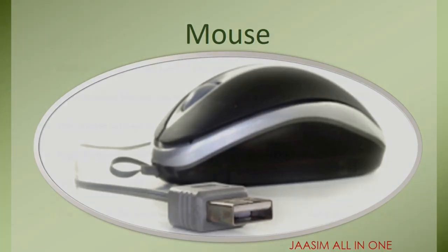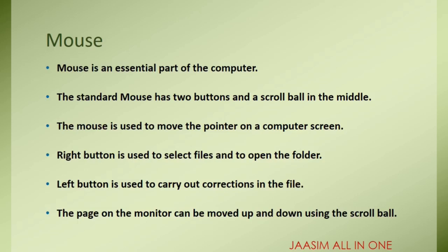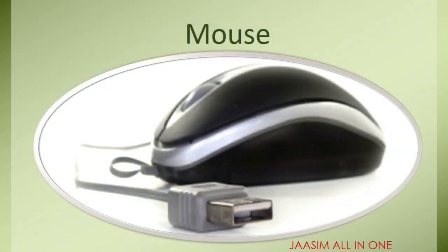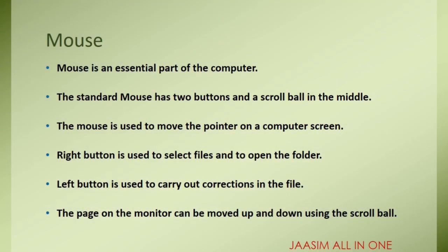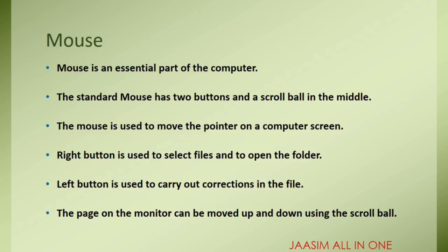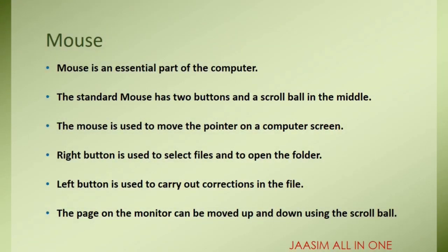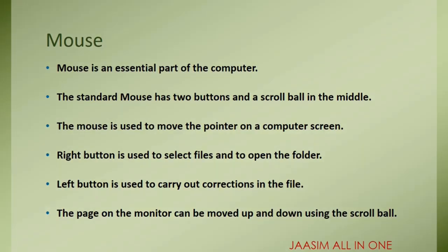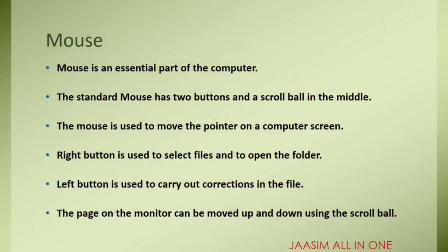Mouse is a very basic input device and an essential part of the computer. The standard mouse has two buttons and a scroll ball in the middle. The mouse is used to move the pointer on a computer screen. The right button is used to select files and to open folders. The left button is used to carry out corrections in the file. The page on the monitor can be moved up and down using the scroll ball. We can customize these buttons according to our usage.